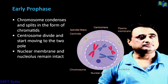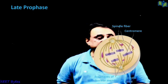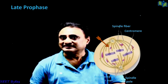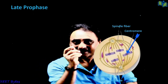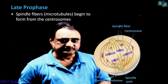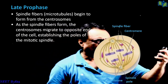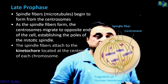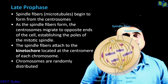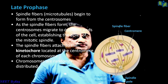Moving from early prophase to late prophase, one important event is the formation of spindle fibers, which are attached to the centromere. Within the centromere, there is a structure called the kinetochore where the spindle fibers actually attach. In late prophase, chromatids are randomly distributed, the nuclear membrane and nucleolus disappear, and spindle fibers are formed. These are the two key features of late prophase: disappearance of the nuclear membrane and nucleolus, and formation of spindle fibers.